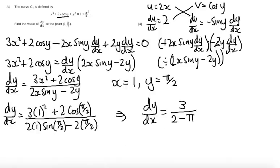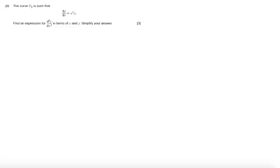Okay then, so let's move on and have a look at part B. Part B says the curve C2 is such that dy/dx is x² times y. Find an expression for d²y/dx² in terms of x and y and simplify your answer.